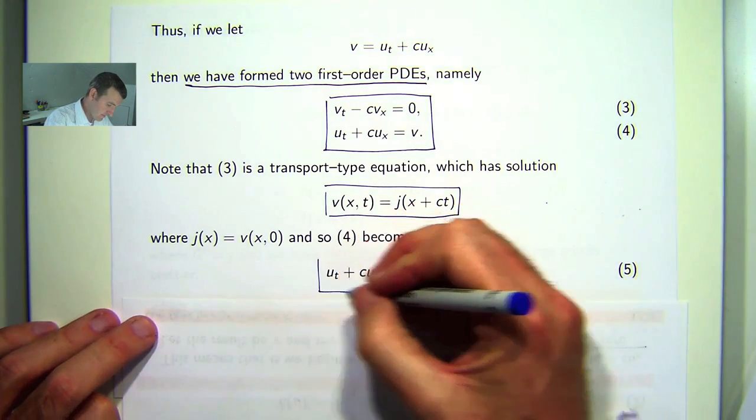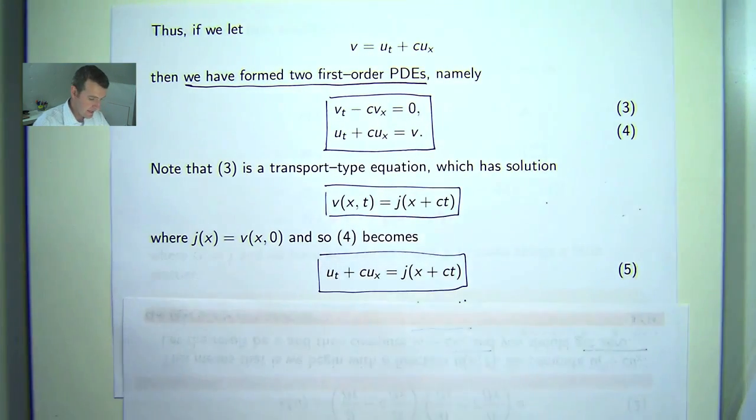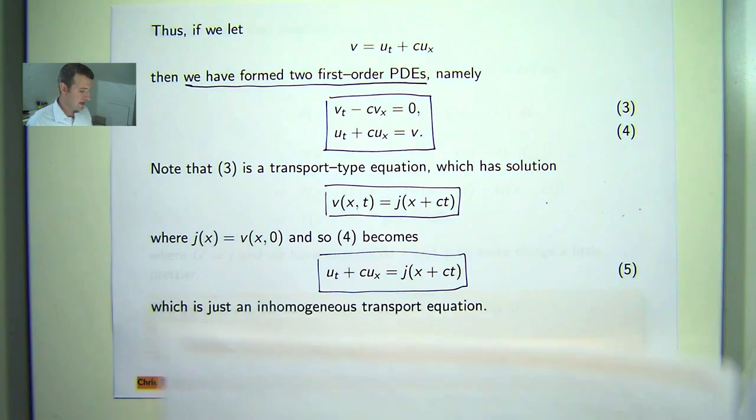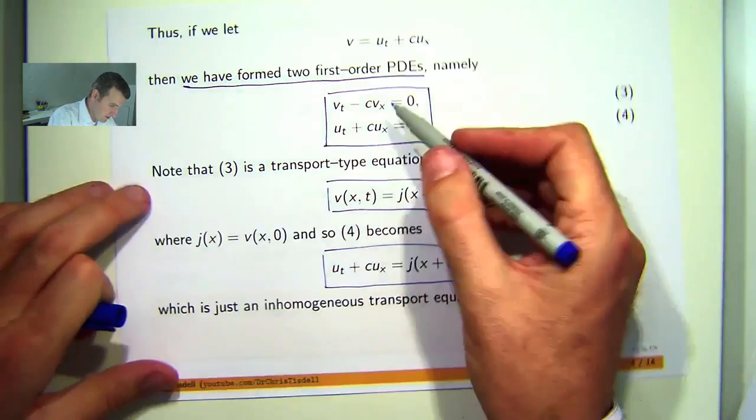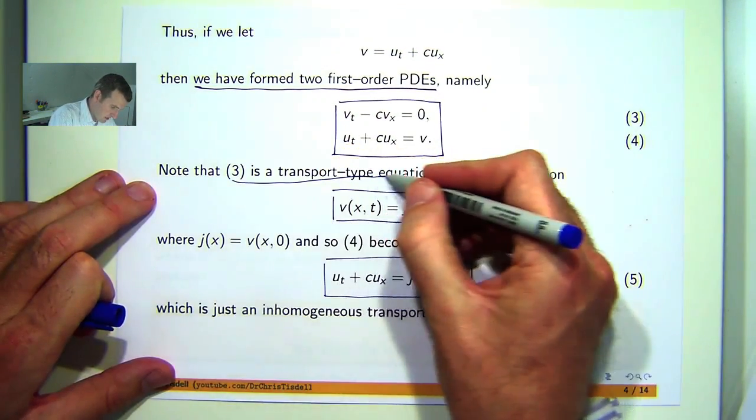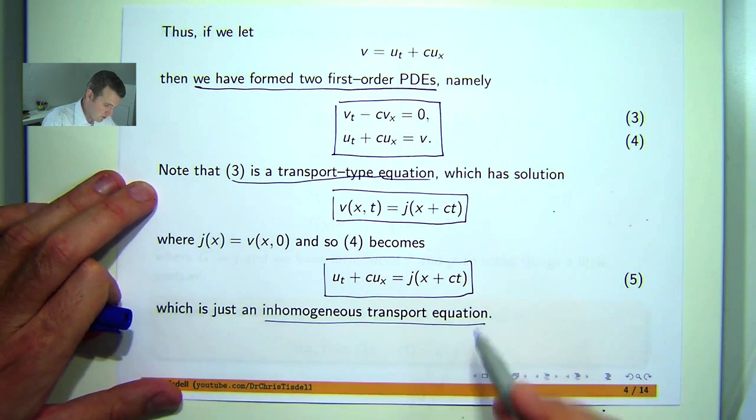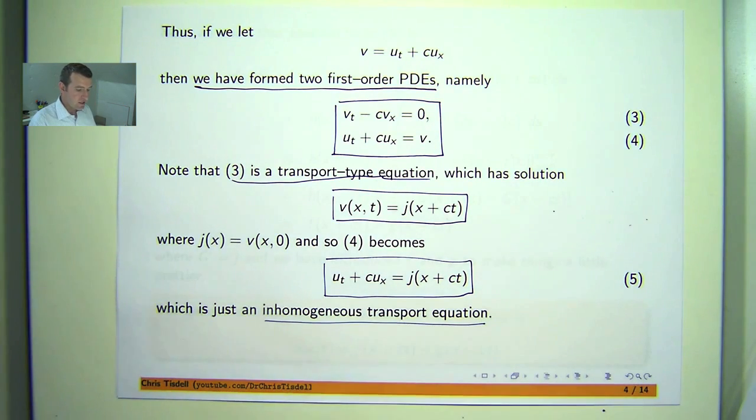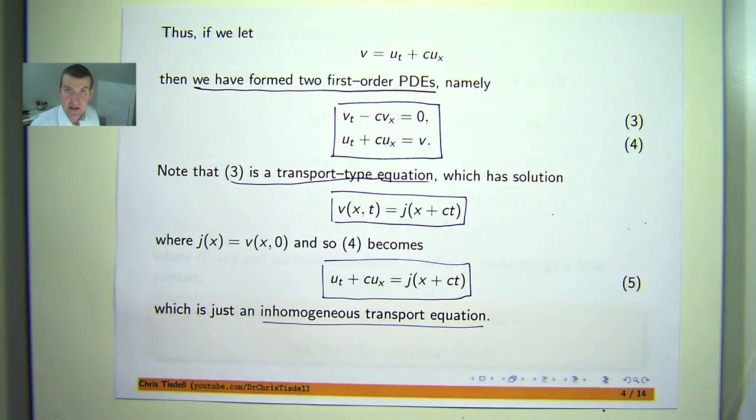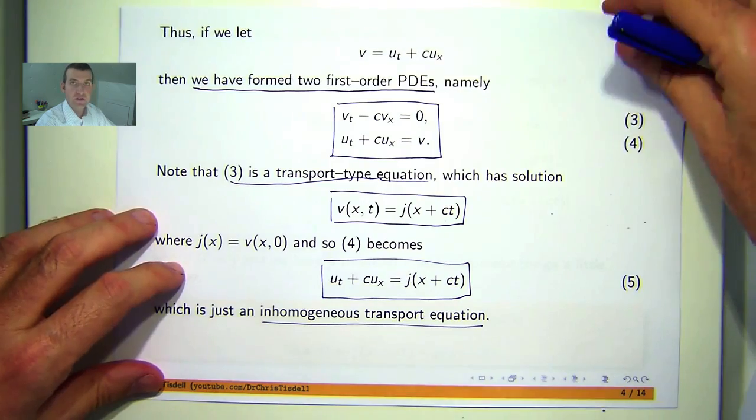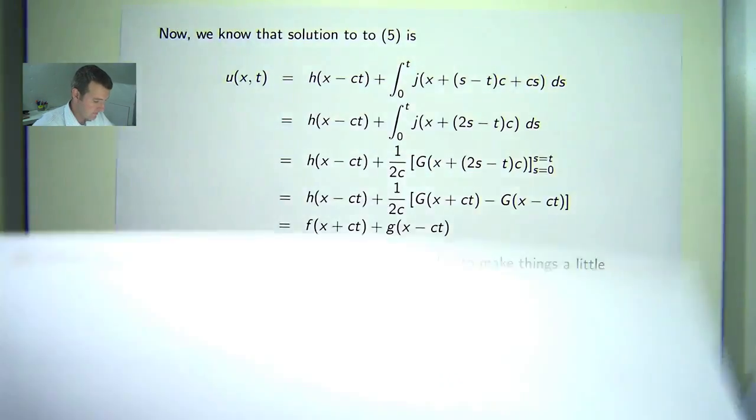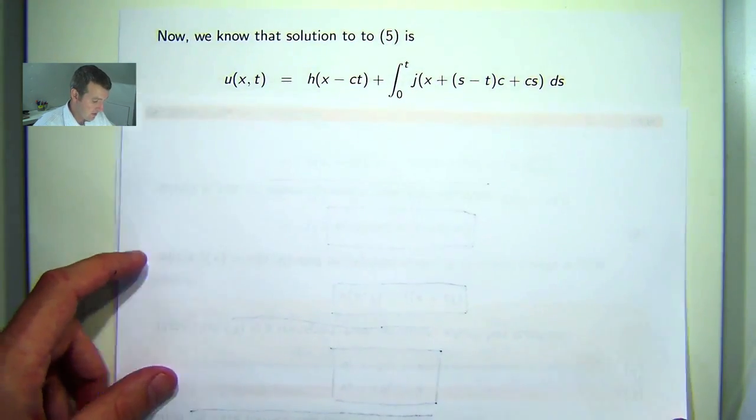So you can solve five a number of different ways. So three was a transport equation, a homogeneous one. Five is an inhomogeneous transport equation. You can solve five a number of different ways. You can solve it using the method of characteristics or you can use the integral representation that I've talked about in previous videos. And that's exactly the way that I've done it.